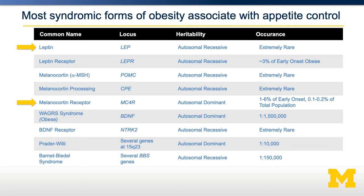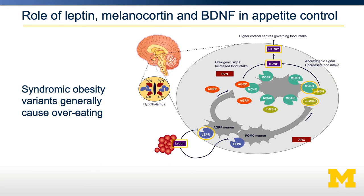Several of these genes — leptin, the leptin receptor, melanocortin receptor, BDNF, the BDNF receptor, and TrkB — all function in a similar way, associating with appetite control within the brain. There is a neural signaling pathway normally active and suppressed by signals including leptin, melanocortin, and BDNF. If the function of any of those genes is impaired, you're taking the brakes off appetite control, generally resulting in overeating. Strikingly, almost every syndromic variant of obesity identified is associated with these particular neural pathways.